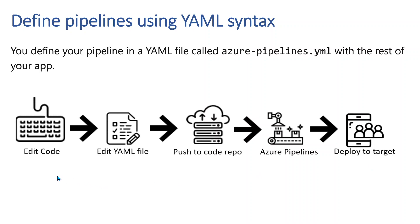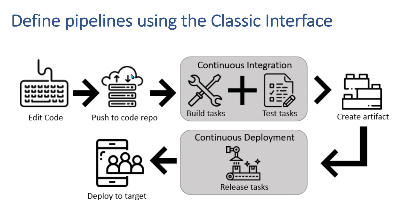Similar to YAML file syntax, there is something called defining pipelines using the Classic Interface. The Classic Interface is a UI — you can build a pipeline in UI form which helps you in visualizing how you build a pipeline. What you do is: first you edit a code and push the code to the repo, and in the CI task you build and test. There is something called an artifact — a package or bundle — and then comes Continuous Deployment where multiple releases can happen. Finally you deploy to your target or production environment.